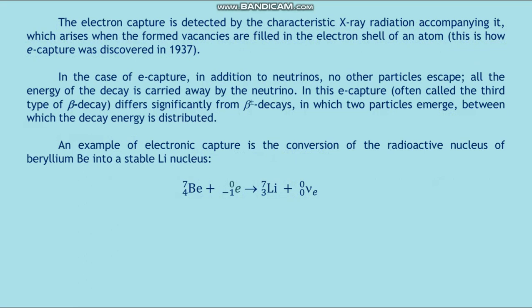Electron capture was discovered in 1937 and is detected by the characteristic X-ray radiation accompanying it, which arises when formed vacancies are filled in the electron shell of the atom. In E-capture, only a neutrino escapes; all decay energy is carried away by the neutrino. This makes E-capture — often called the third type of beta decay — differ significantly from beta-plus decay, in which two particles emerge sharing the decay energy. An example of electron capture is the conversion of the radioactive nucleus beryllium into the stable lithium nucleus.